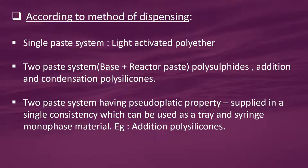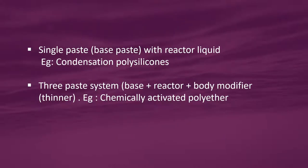According to method of dispensing, it is classified as: single paste system — light-activated polyether; two-paste system (base plus reactor paste) — polysulphides, addition and condensation polysilicones; two-paste system with pseudoplastic property applied in a single consistency usable as both tray and syringe — monophase addition polysilicones; single paste with base paste and reactor liquid — condensation polysilicones; and three-paste system (base plus reactor plus body modifier/thinner) — chemically activated polyether.